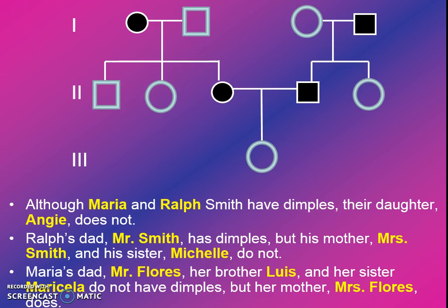Although Maria and Ralph Smith have dimples, their daughter Angie does not. Ralph's dad, Mr. Smith, has dimples, but his mother, Mrs. Smith, and his sister, Michelle, do not.